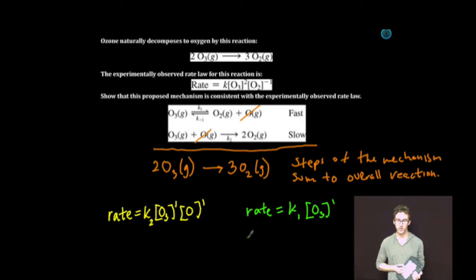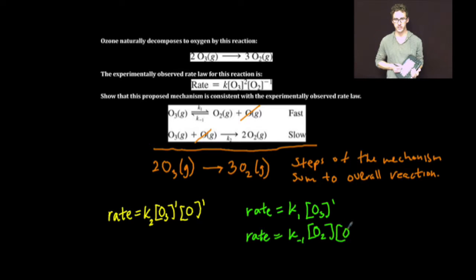And if I were to write the rate law for the reverse reaction of that initial step, it would be rate is equal to my rate constant times the concentration of O2 times the concentration of O, both to the first order.